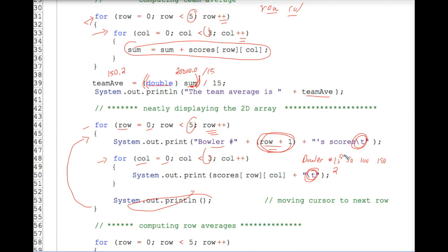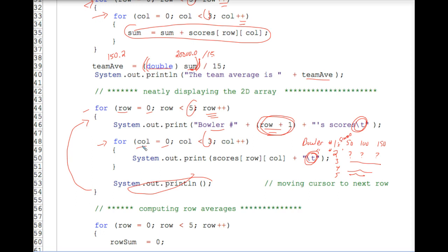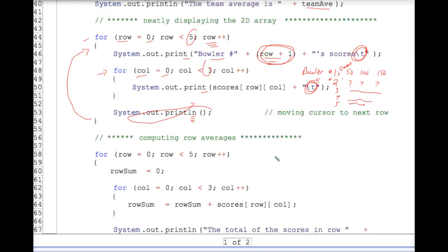So accounting for that fact and providing a nice user interface, the people will see, actually they'll see the phrase bowler number right here. So it's going to say bowler number one's scores will be printed out in here. And then 50, 100, 150. Then bowler number two's scores will be three numbers. And then bowler number three, blah, blah, blah, number four, and number five. And then the program will have stopped in this portion of the program. So that whole little section uses a double nested for loop to neatly print the data that's stored in the two dimensional array using tabs. And pay attention here. We have a print, we have a print, and we have a println.